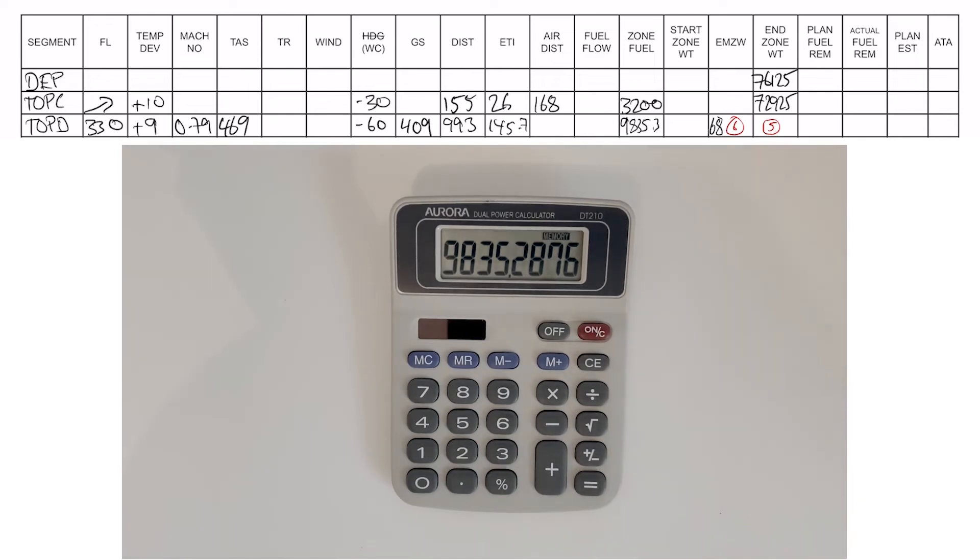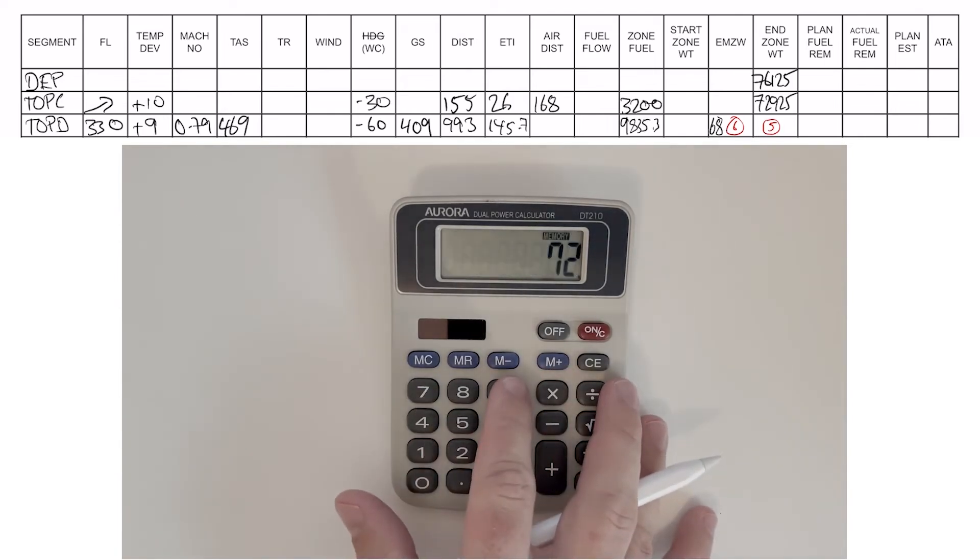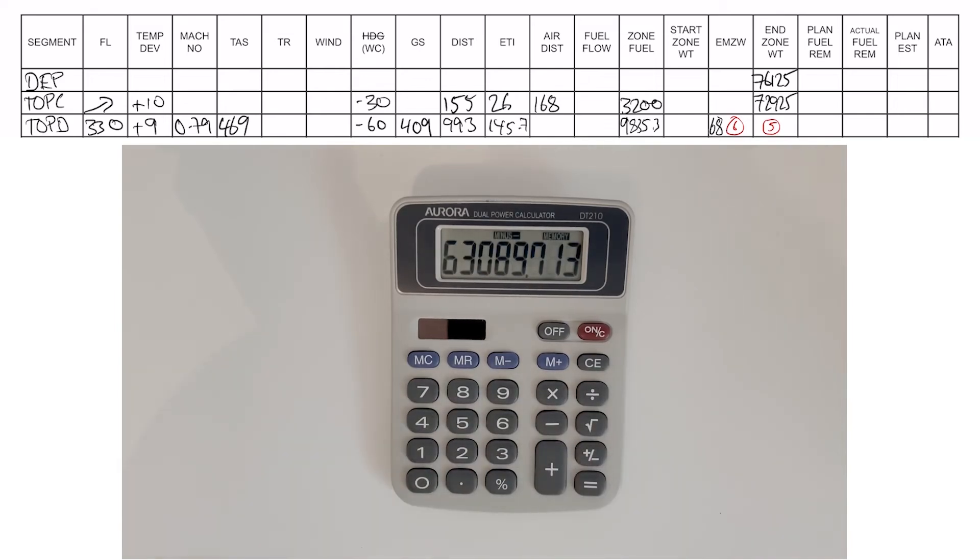Next, we need to work out the end zone weight. Without taking the number off the calculator, I'm going to subtract the start zone weight of 72,925. This will give me a negative number, but that's not a big deal—the number is still the same, it just happens to be negative. If you don't like it, you can click the plus-minus button. There's our end zone weight.